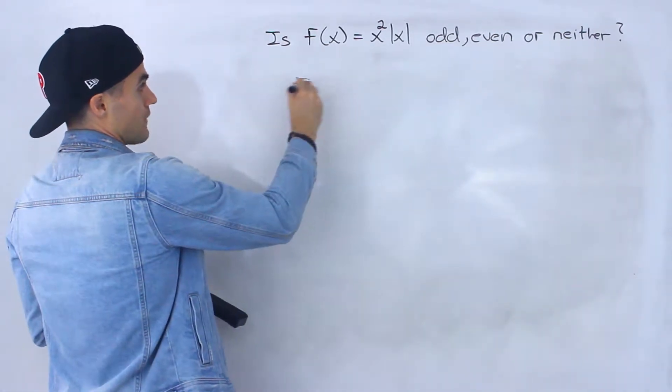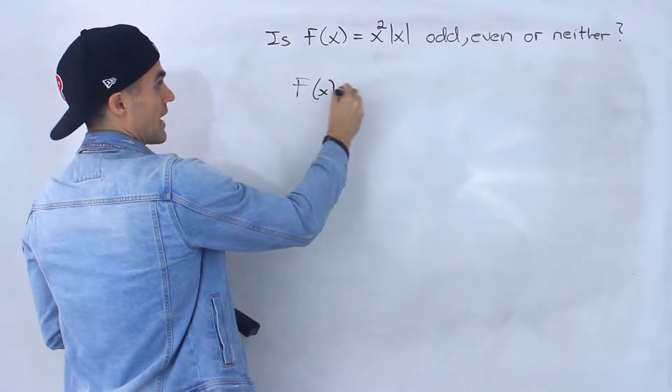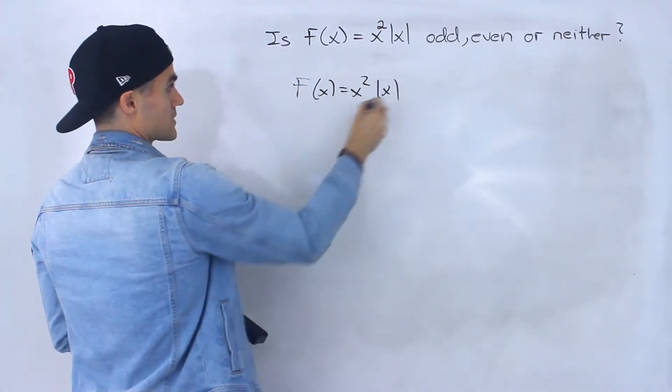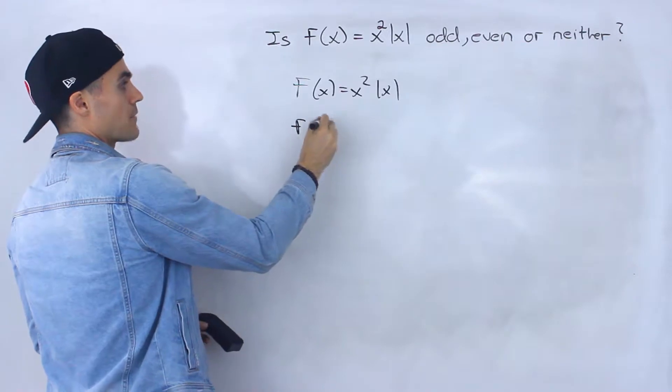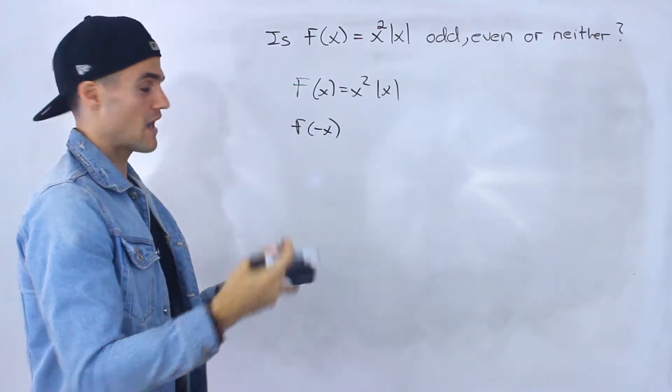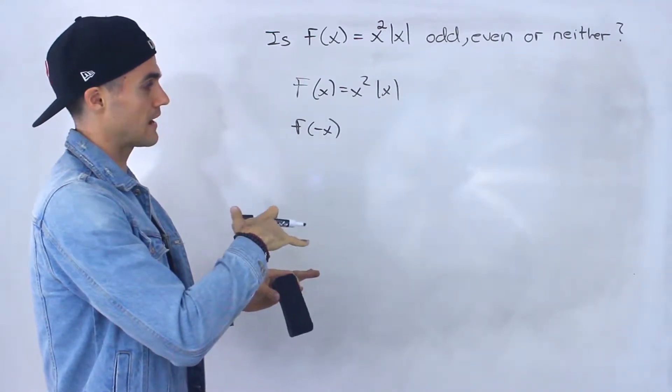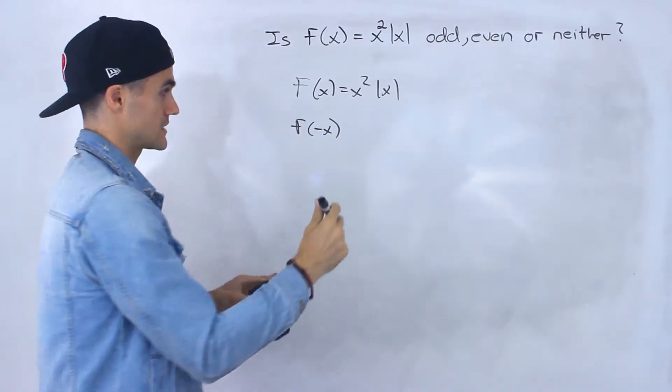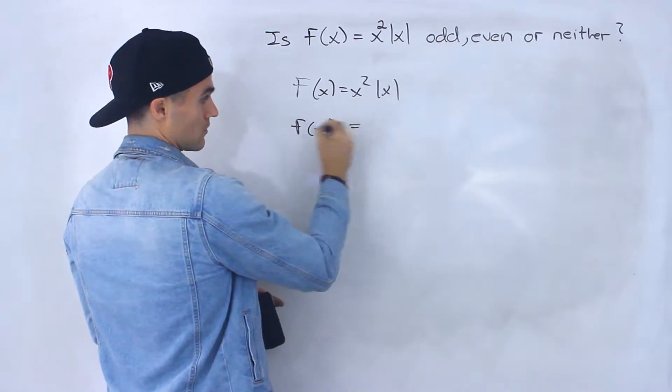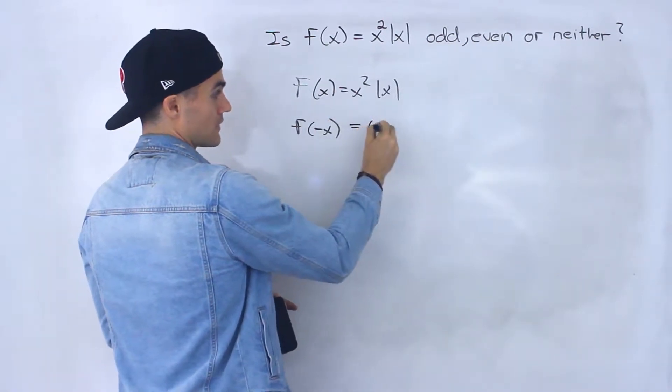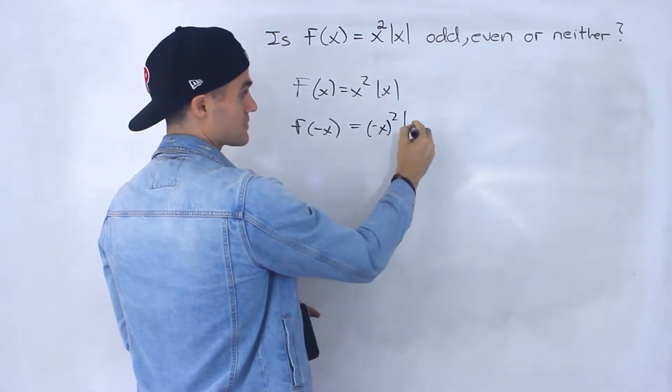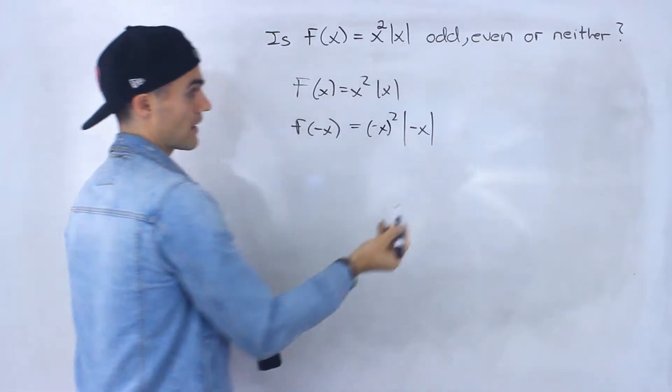So we got f of x equals x squared absolute value x. We got to see what's happening with f of negative x. If f of negative x equals f of x, it's even. If it's equal to negative f of x, it's odd, and then if it's neither of those, well then it's just neither.